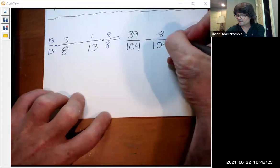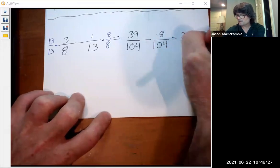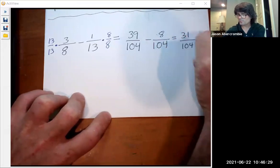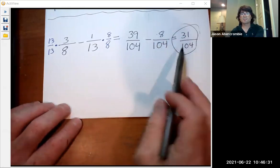And then we subtract the tops, not the bottoms. So 39 minus 8 is 31 over 104. And that does not reduce because 31 is a prime number.